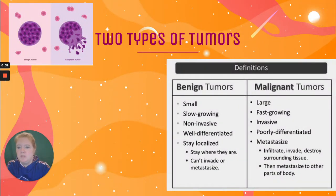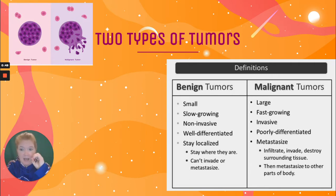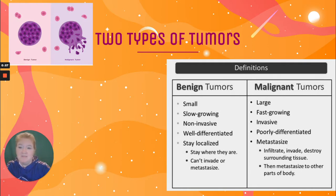There are two types of tumors: benign tumors and malignant tumors. Benign tumors are typically small and slow-growing. They're non-invasive, meaning they're contained in one location and aren't spreading. When you have a malignant tumor, it means it's larger, typically faster-growing, it can be invasive — meaning it might be infringing on another tissue or organ — and they often metastasize, which means they're spreading.